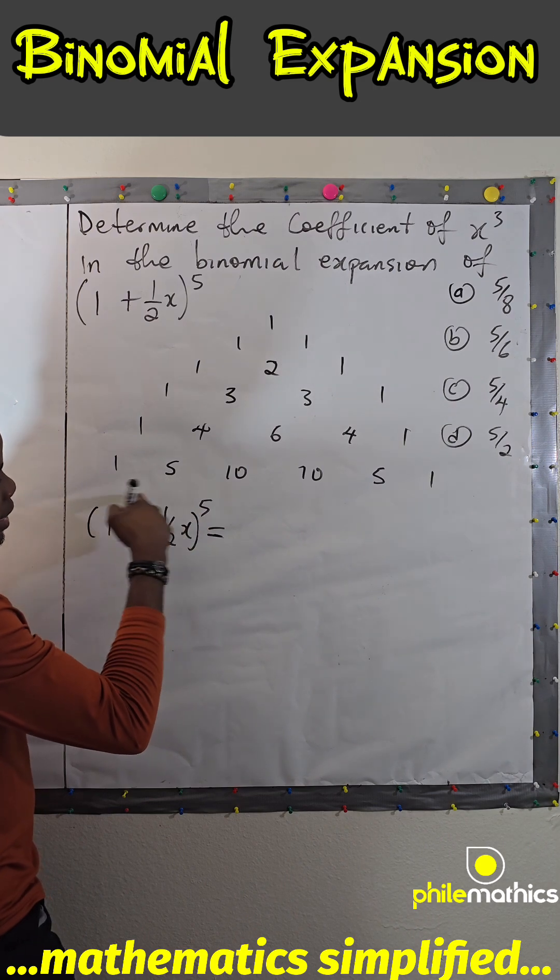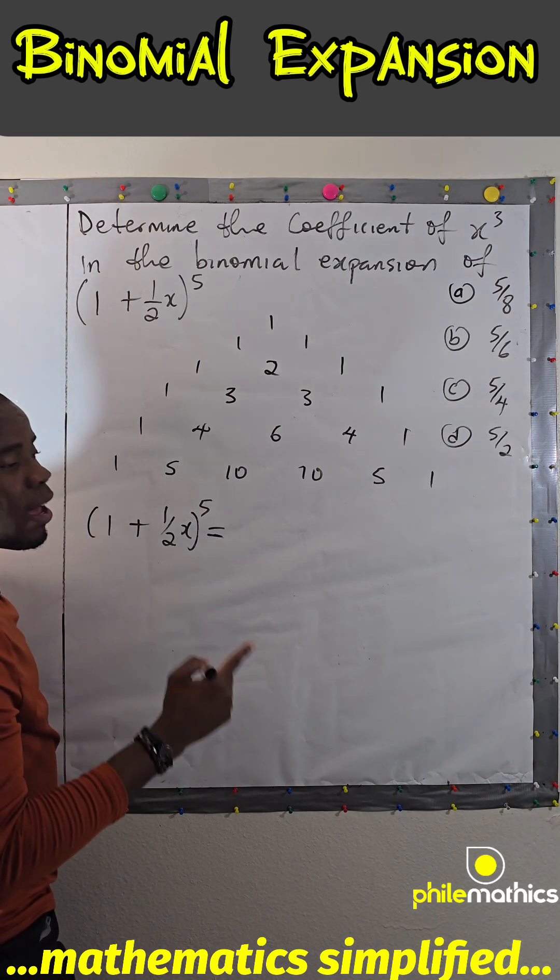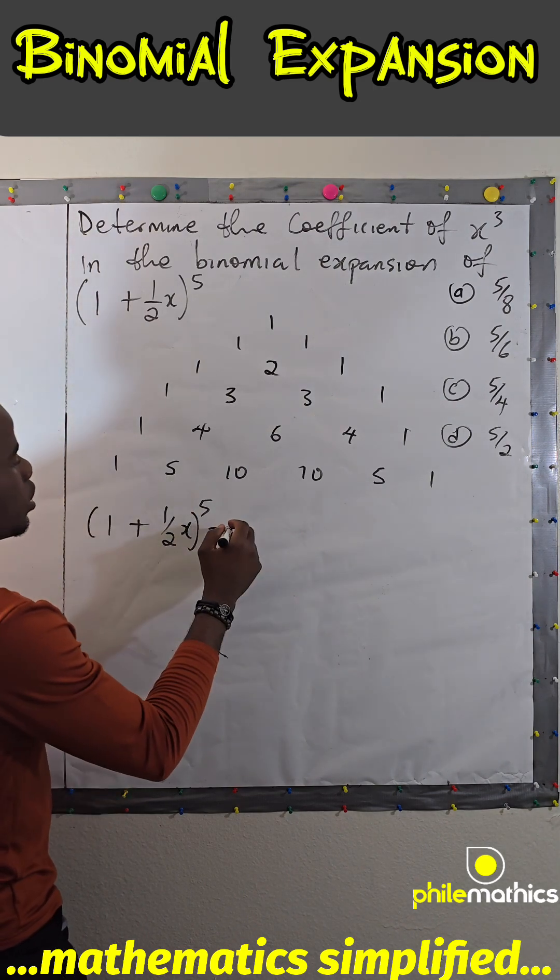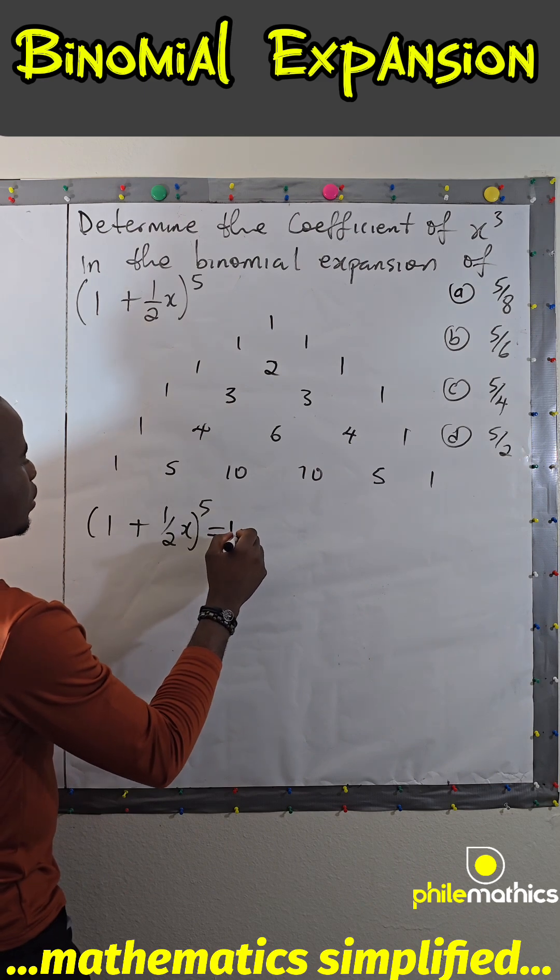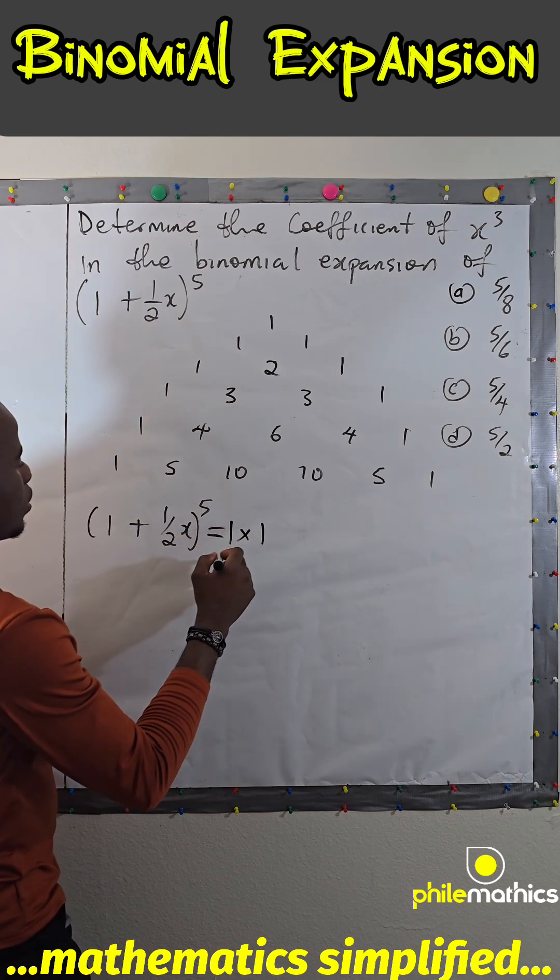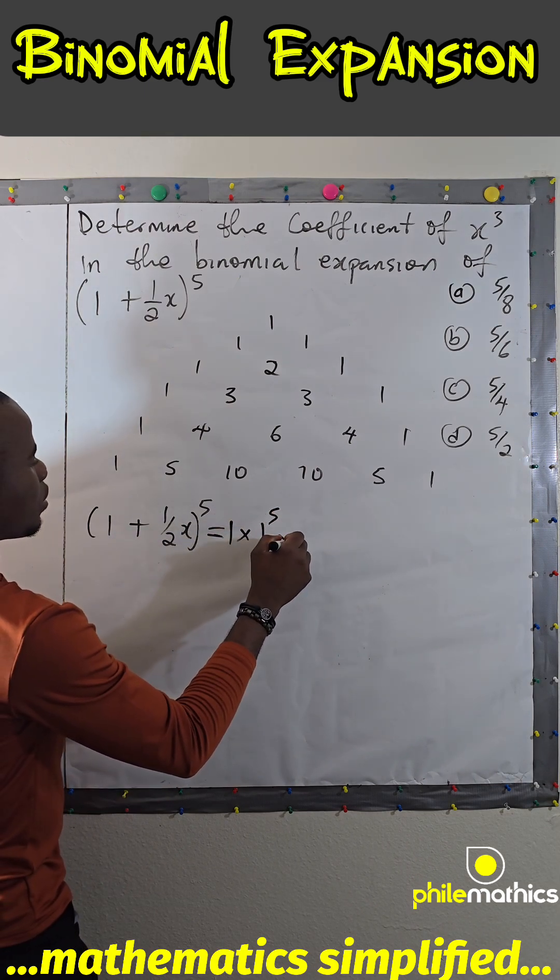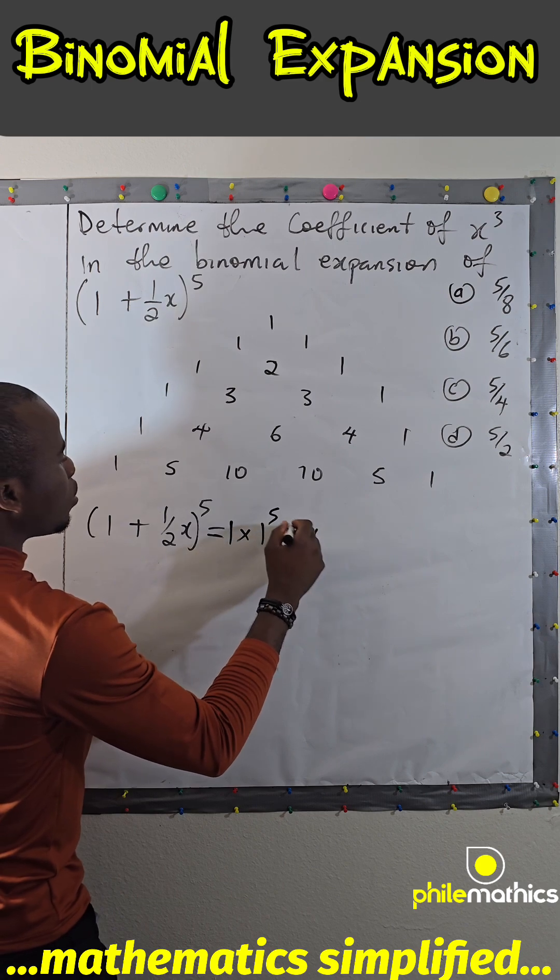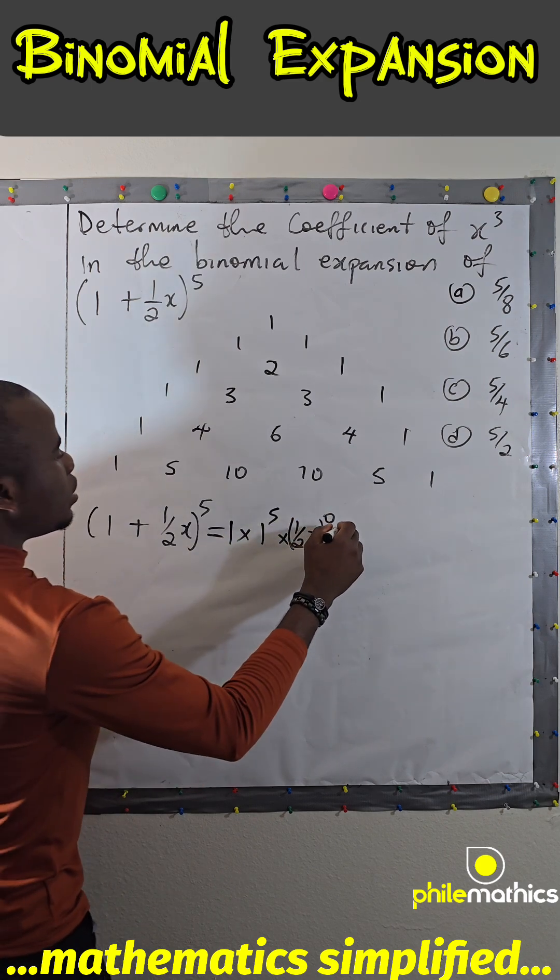So look at what I'm saying. You start with 1 times 1 to the power 5 times (1/(2x)) to the power 0. The next is the next power, 5 times 1 to the power 4.